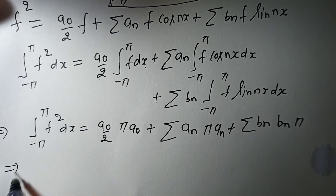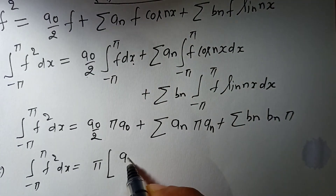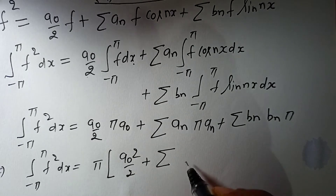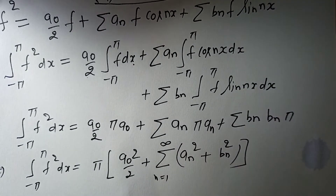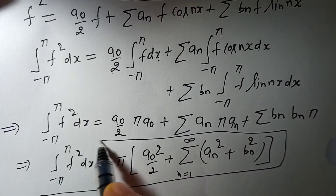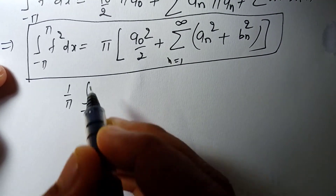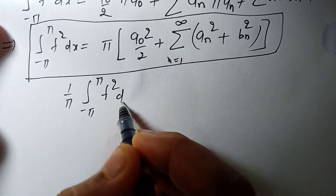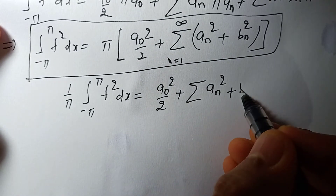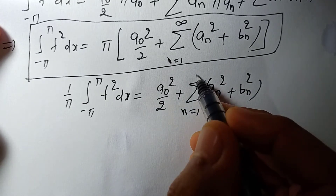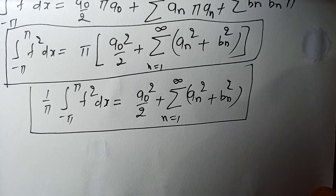Taking π common, we get: ∫₋π^π f² dx = π · [a₀²/2 + Σ(aₙ² + bₙ²)] where n varies from 1 to infinity. Dividing both sides by π: (1/π)∫₋π^π f² dx = a₀²/2 + Σ(aₙ² + bₙ²). This is Parseval's Identity, and we have seen how it comes from the Fourier series.